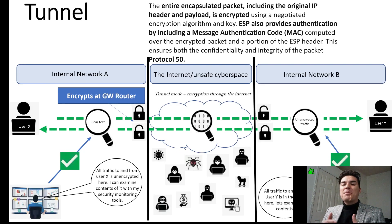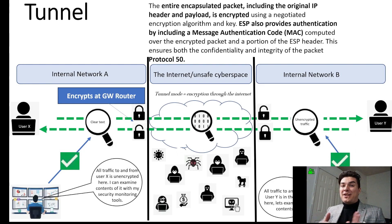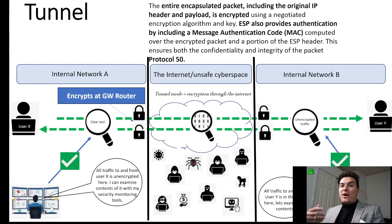In tunnel mode, the entire packet is encrypted, including the IP address. So they need to place an additional IP address in front, that way it's able to reach its destination.